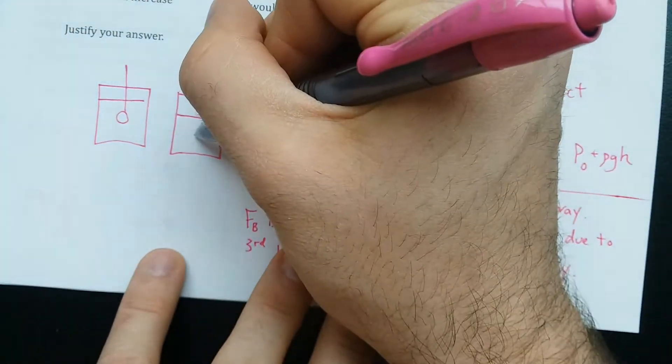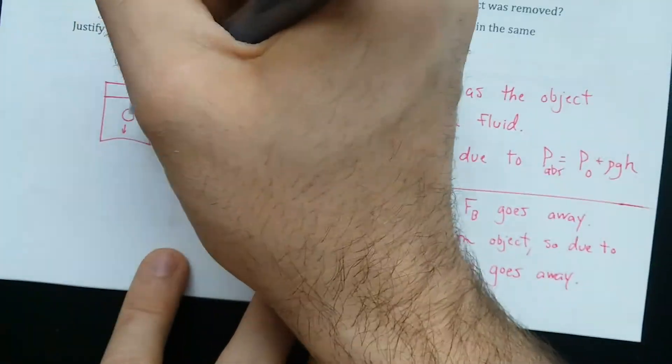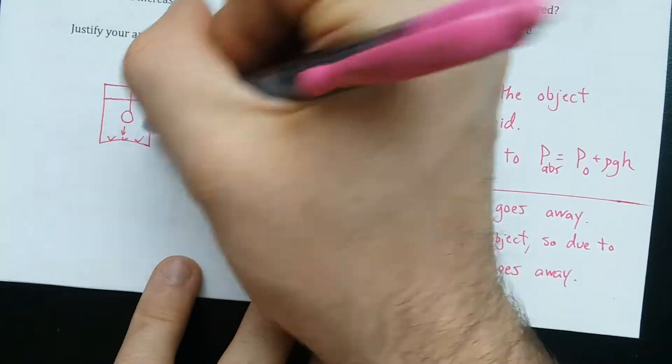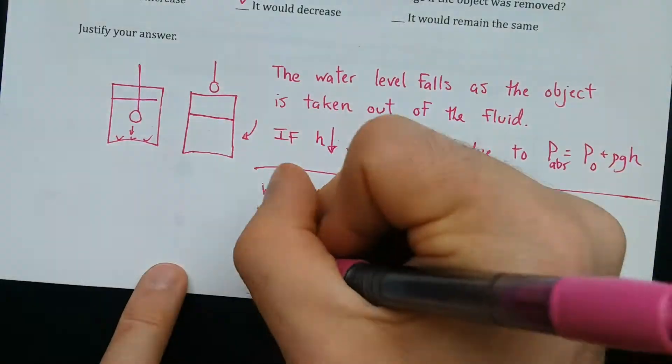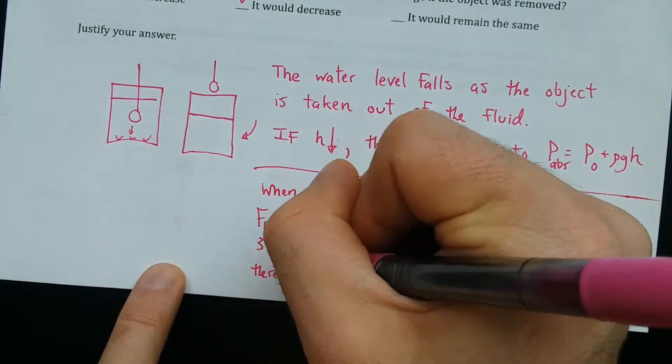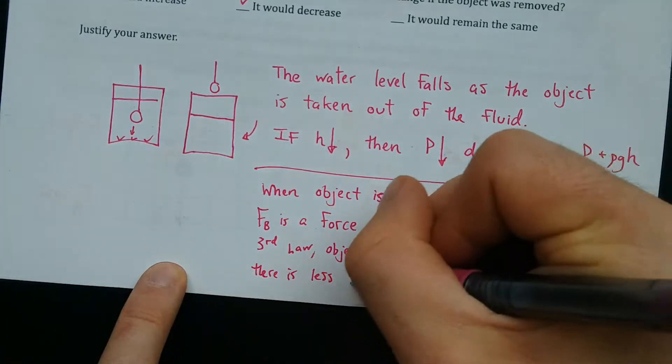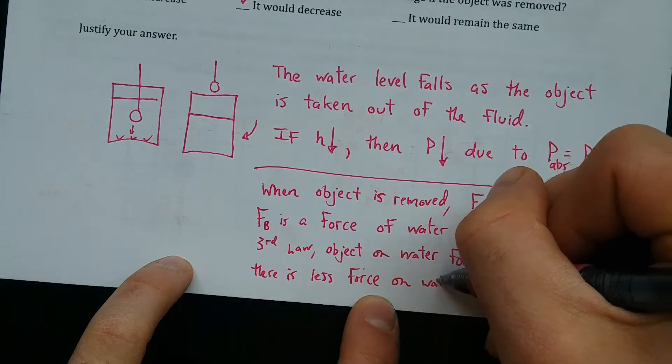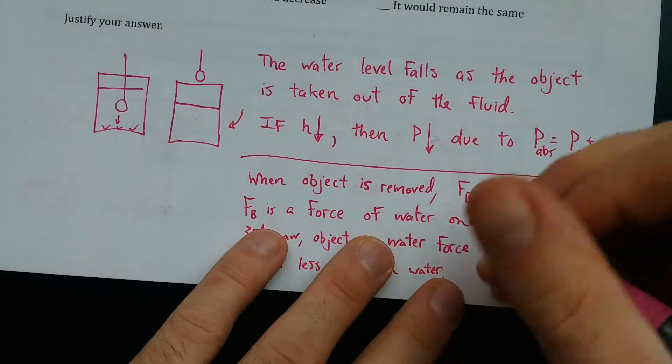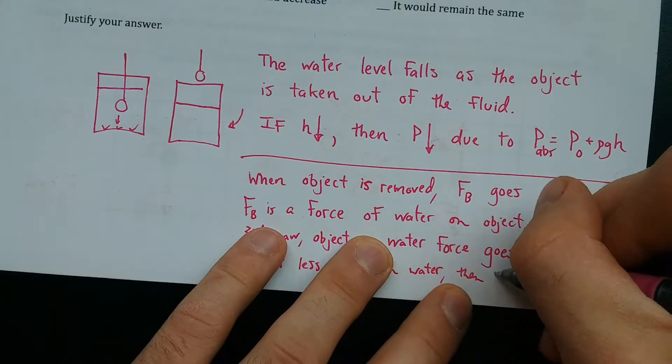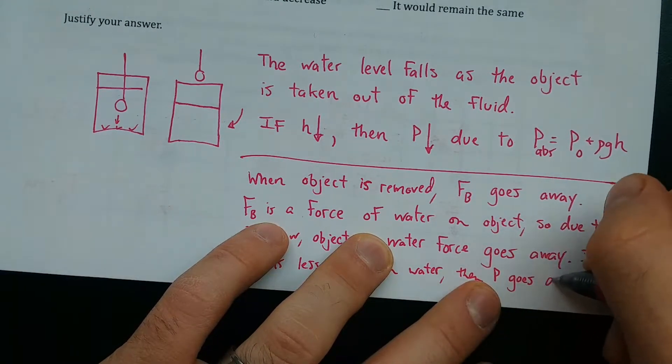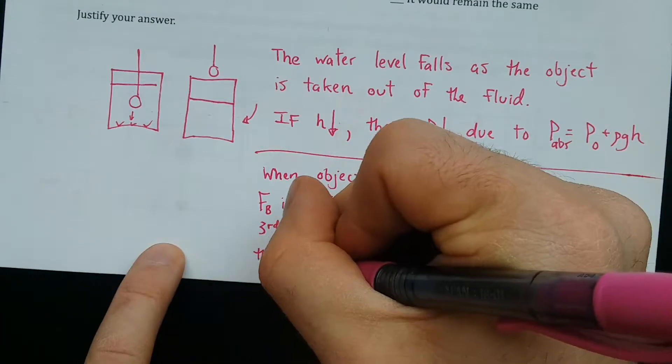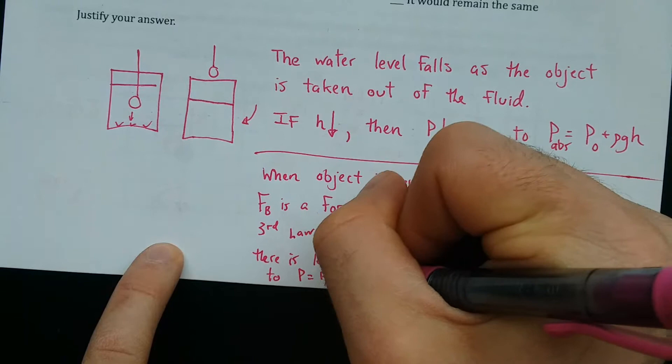This object on water force is on the water, is acting downward. And that increases the collisions that are happening here, makes them more violent down beneath. If there is less force on the water, then pressure goes down due to p equals f over a.